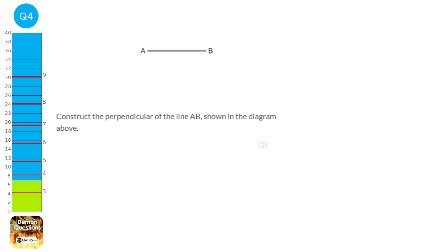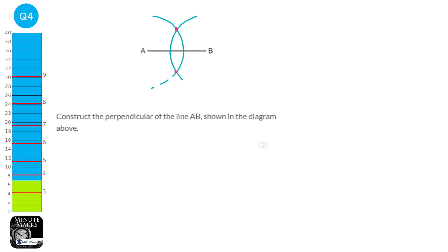There's a very specific way to draw a perpendicular bisector from a line. You get a pair of compasses and measure roughly 3 quarters of the way between A and B, and draw an arc from point A. Then draw an arc from point B. The two arcs intersect at two points, and you draw a straight line joining those intersections. Always leave your arcs on the page to make sure you get full marks.